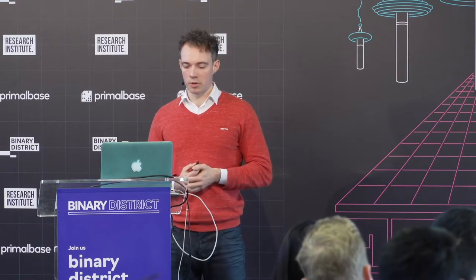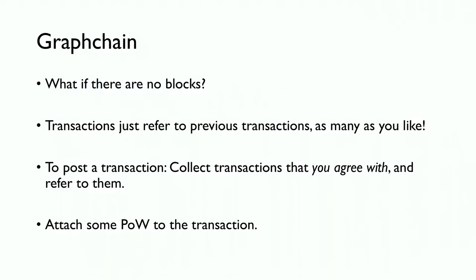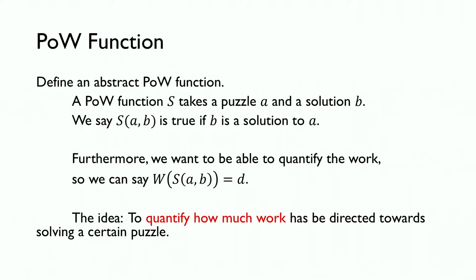This is the graph chain, essentially. The question was: what if there are no blocks? Transactions just refer to previous transactions, as many as you like. To post a transaction, you simply collect transactions that you agree with, refer to them, and attach some proof of work to the transaction. Now, how can this work? We can define abstractly a sort of proof of work function — this is quite an abstract idea, but it's realized in practice quite easily with hash functions.